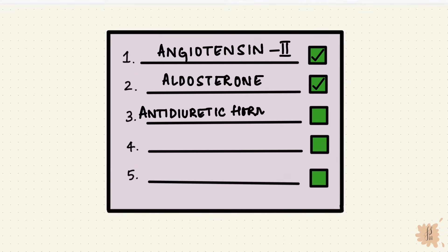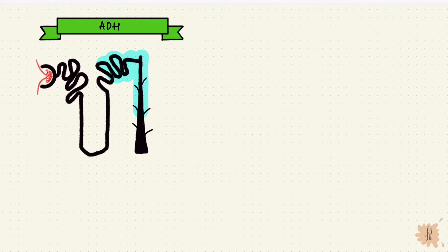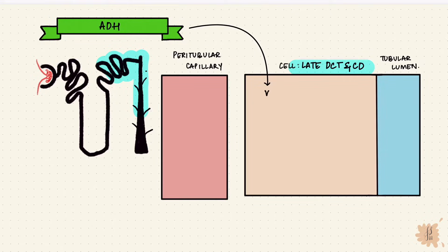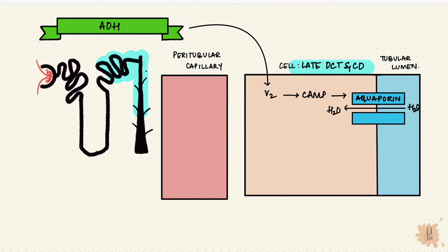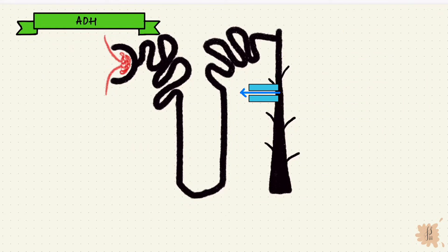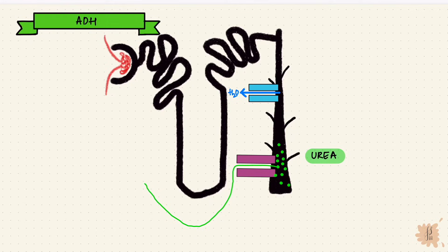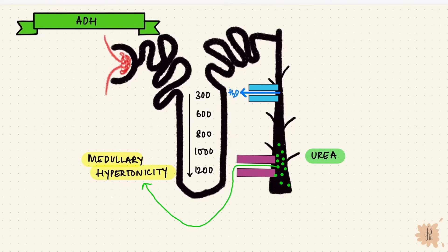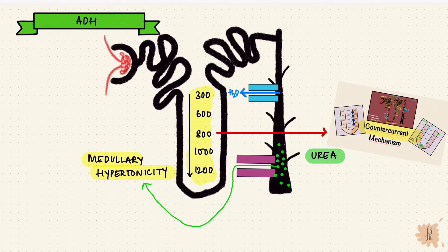Third is the antidiuretic hormone. ADH stimulates the V2 receptor and via cAMP, it creates aquaporins, which are channels for water to be reabsorbed. So ADH controls concentration and dilution of urine. When ADH reabsorbs water, the urea concentration in the medullary collecting duct rises, encouraging it to move into the interstitium through the urea transporters. So ADH contributes to maintenance of medullary hypertonicity, forming the corticomedullary osmotic gradient, which is needed to concentrate urine.